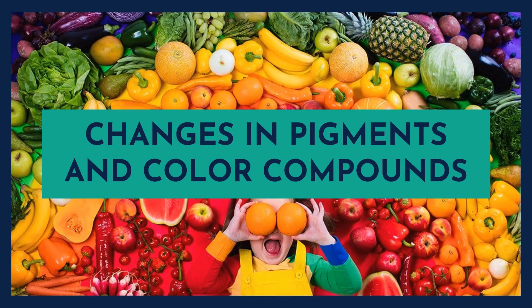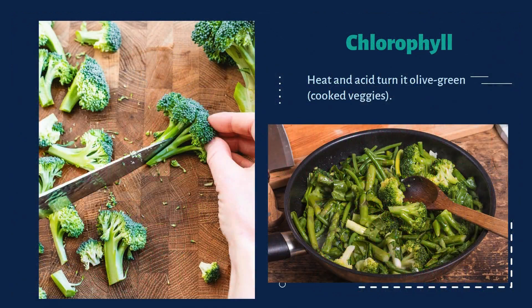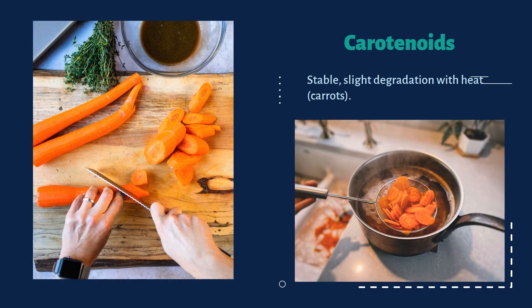Now, what are the changes in pigments and color compounds? Food colors come from natural pigments, but these can change due to heat, pH and oxygen. Chlorophyll makes green vegetables vibrant, but too much heat can turn it pale — try cooking broccoli at home. Carotenoids are stable but slightly degrade with heat; for example, cooking red carrots will turn them more orangish in color.